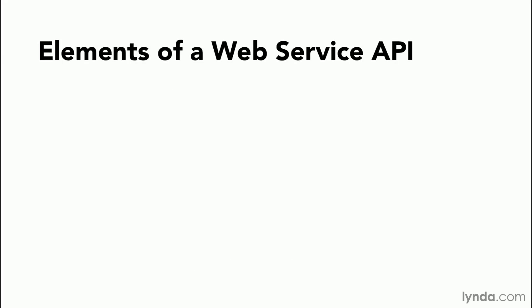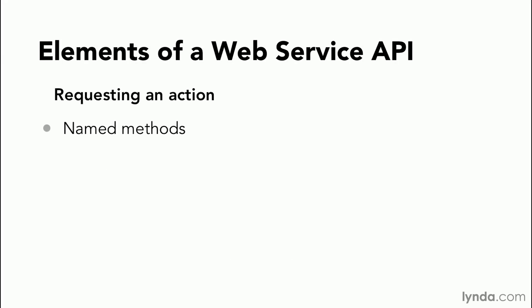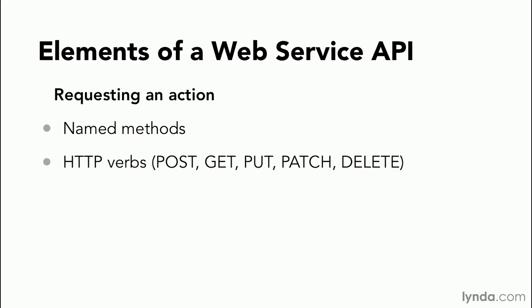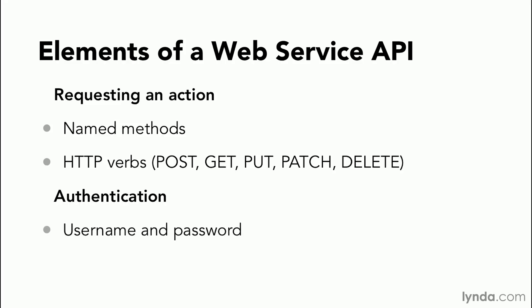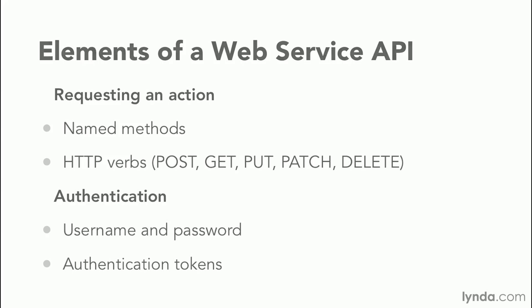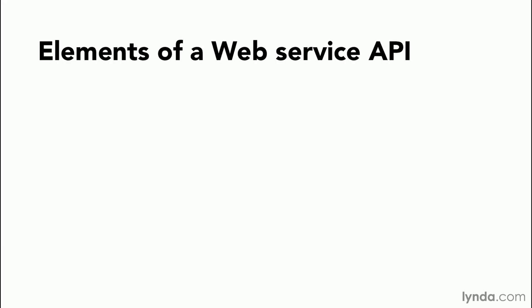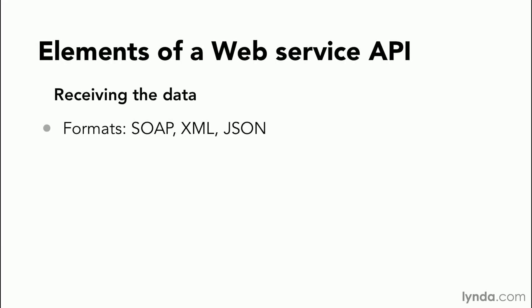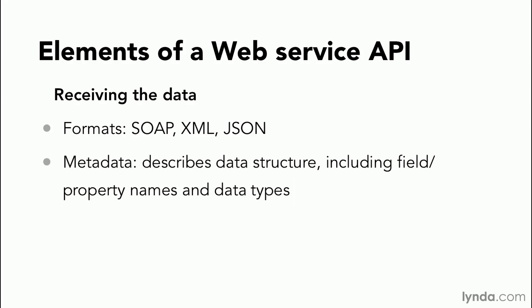Other things you'll learn from the API documentation include: are actions on the web service associated with HTTP verbs such as GET, POST, PUT, and DELETE? Is the web service secured, and if so, what do you need for authentication? Are a simple username and password sufficient, or does some sort of security token get passed back and forth? And when data is returned from the web service, what form will it be in — XML, JSON, or some other format? Are there particular field names and data types you need to know about? And are you always getting back all of the data, or is there some sort of data paging mechanism?